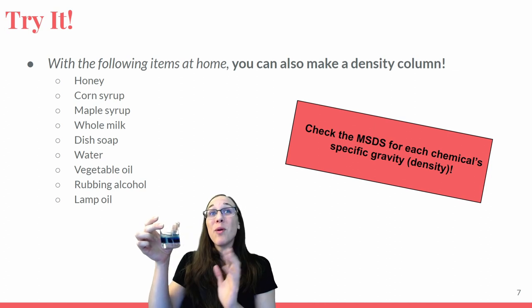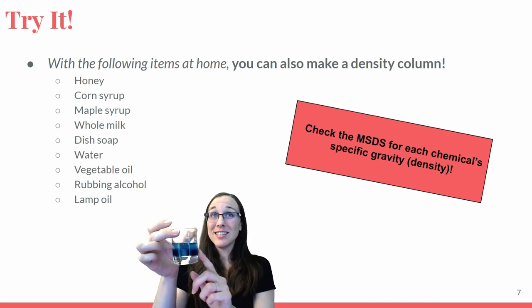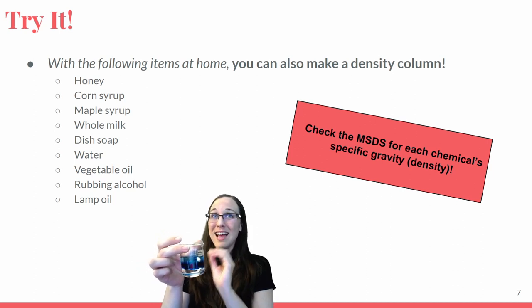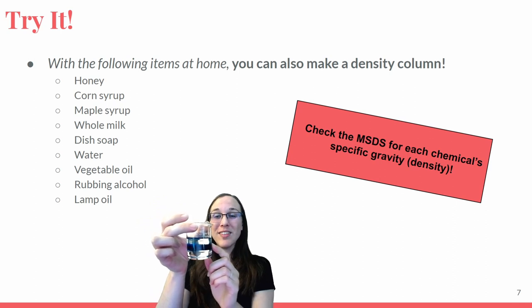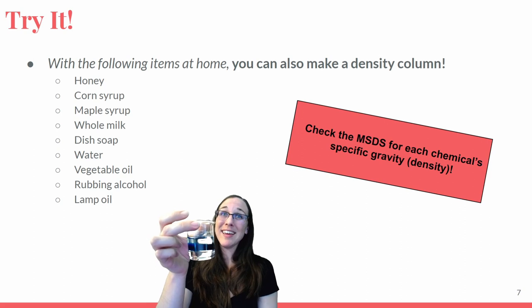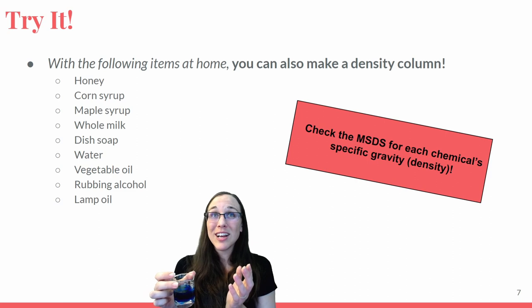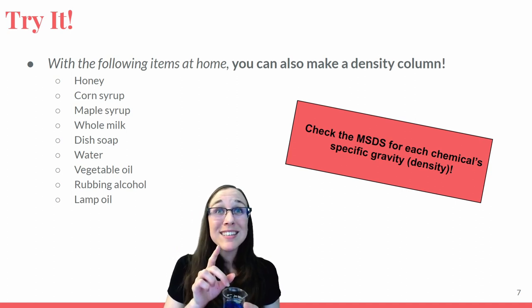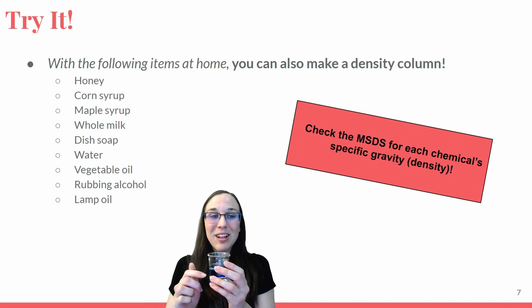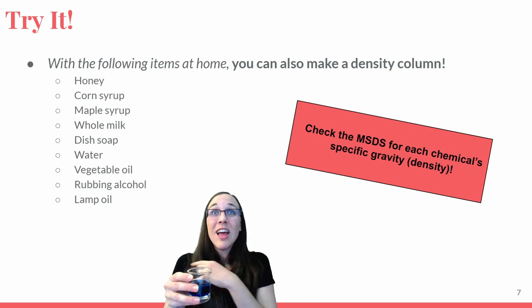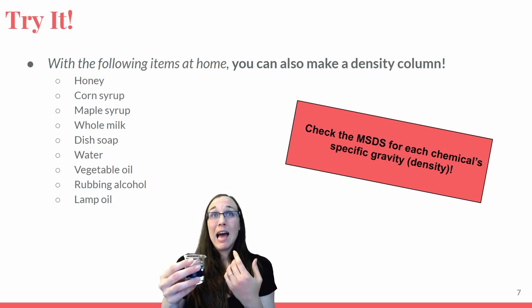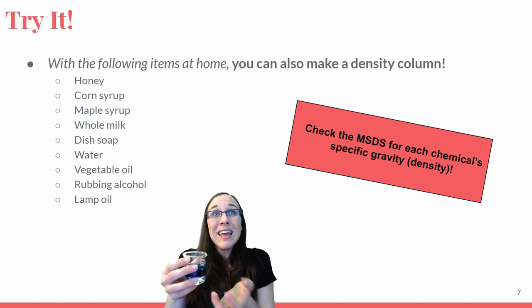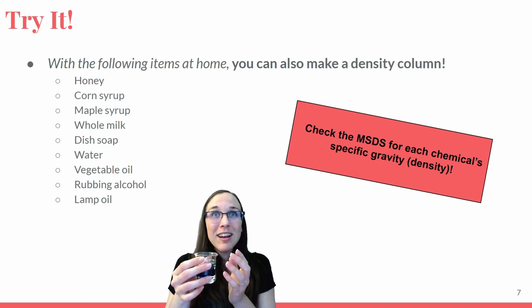A basic version with just corn syrup, water, and isopropyl alcohol is pretty straightforward — you can't mess that one up very easily. Give it a try. Another fun thing is to drop objects into your density column — a paperclip, a grape tomato, a plastic bead, or a penny — and see where they stop. Where an object stops in the column gives you an idea of that object's density relative to the layers.